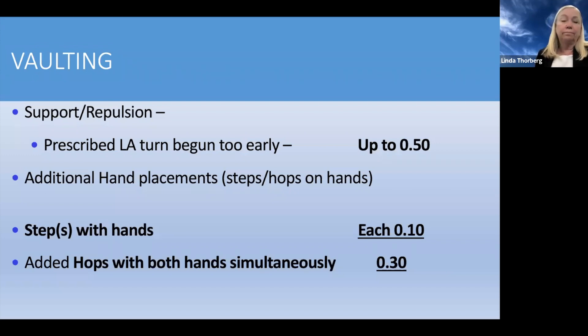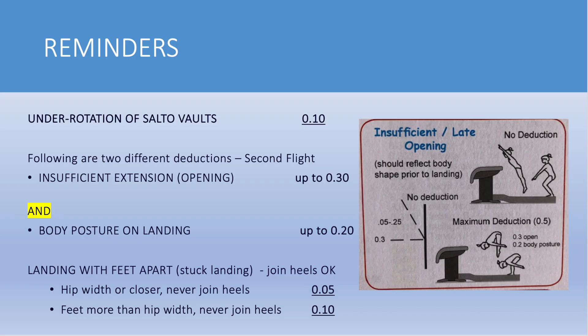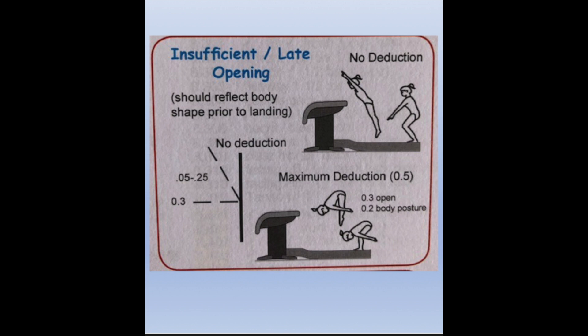These are reminders on vaulting — not new, they've been there for a long time. We want to see the gymnast maintain a nice straight shape coming down, or open from a tuck or pike to extension before landing — up to three-tenths deduction. We also have body posture on landing: when she lands on the ground, what shape is she in — up to two-tenths. The graphics show the chest position being upright and stretching before landing versus no opening and landing bent over. The total that could be deducted is five-tenths if all of that occurred.